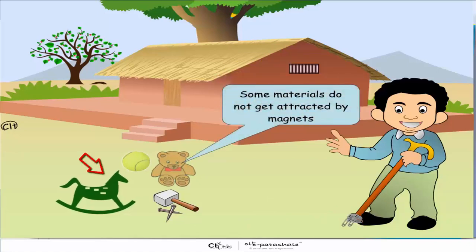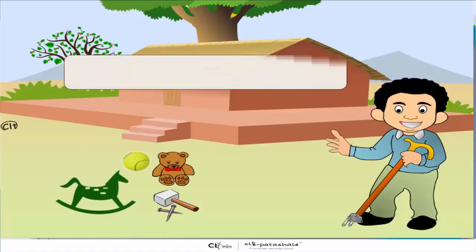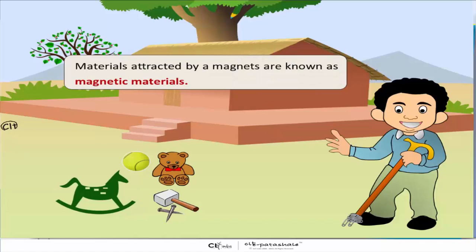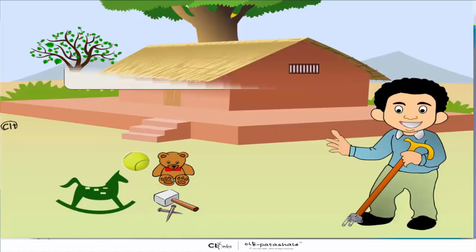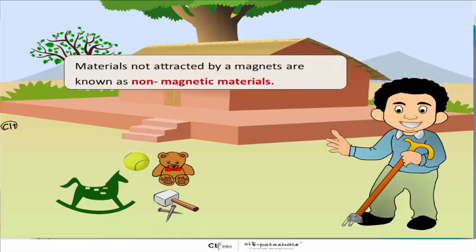Some materials do not get attracted by magnets. Materials attracted by magnets are known as magnetic materials. Materials that do not get attracted by magnets are known as non-magnetic materials.